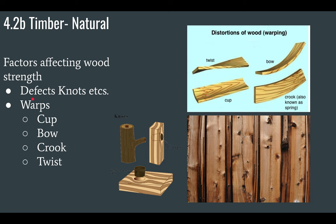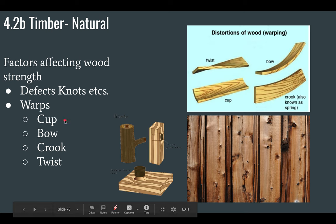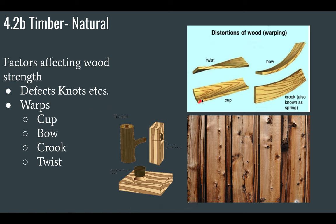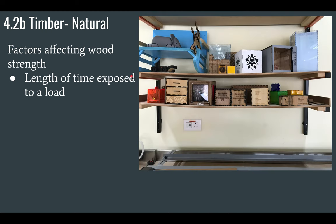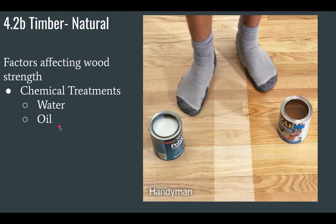Defects also affect wood. Knots occur where a branch comes out of a tree — here's some knotty pine. You can also get warps: cupping is a U-shape, a bow is cupping against the grain, bending with the grain, or the wood can twist or crook. Additionally, the duration of a load on a piece of wood will cause it to bend over time, as you can see where sustained loading causes deflection.